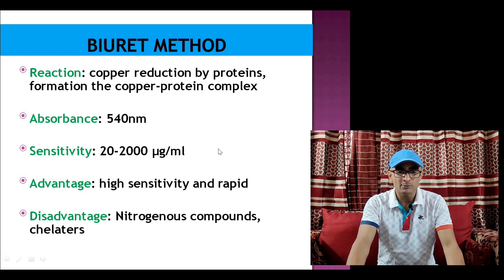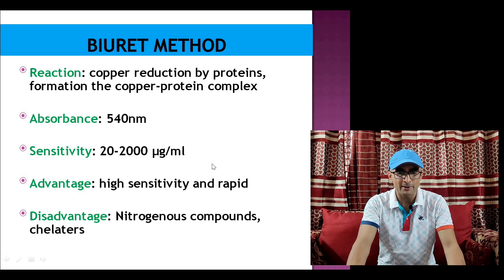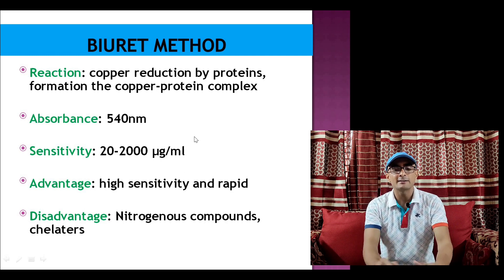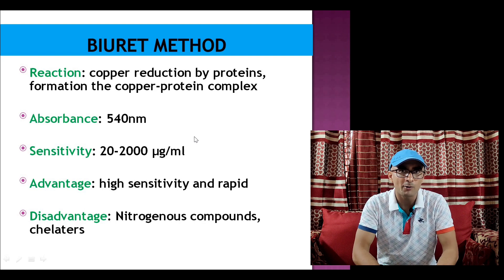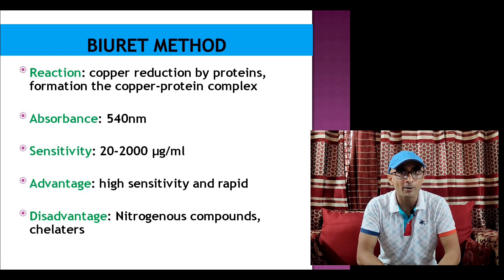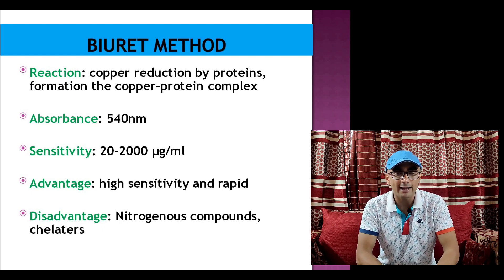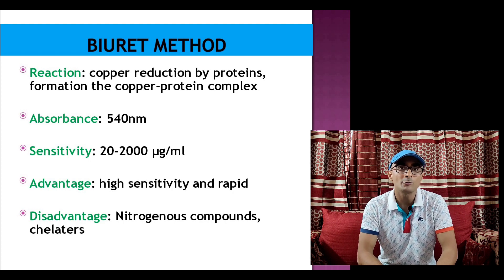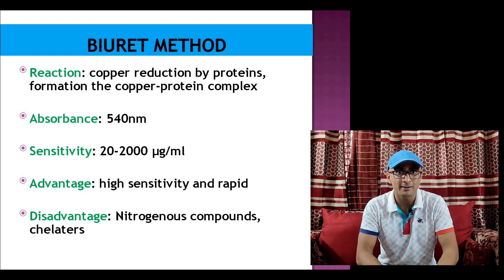The advantage of the method is it is very sensitive and rapid in comparison to other methods. The disadvantage of this method is presence of nitrogenous compounds. If protein sample contains any other compound which has nitrogen atom, that also can react with this copper cupric ion and give rise to some color.